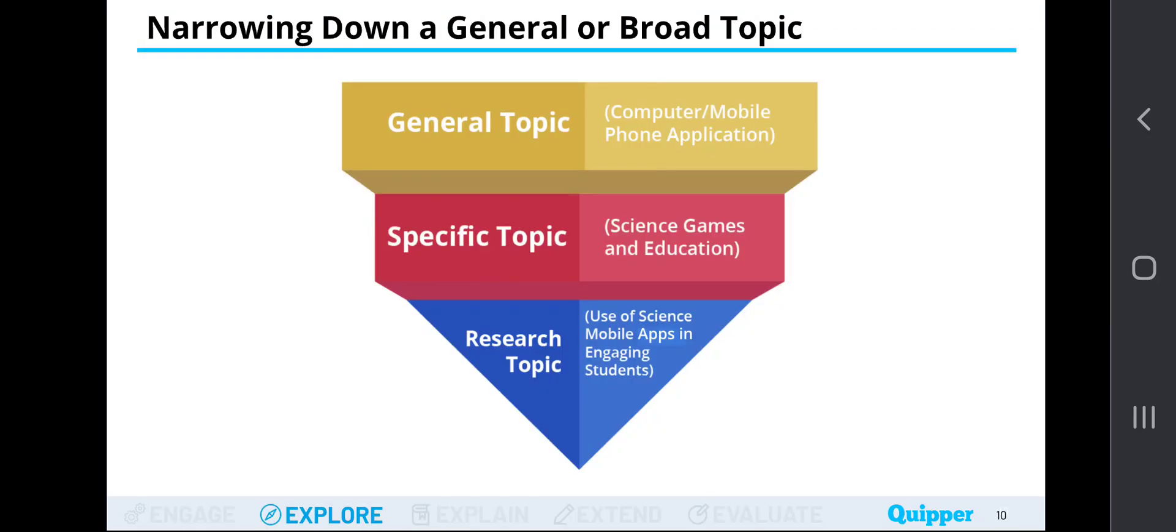Now, let's narrow down general and broad topics. In this example class, we are going to learn that research problems or conducting your research in a qualitative context will always begin with a general or broad topic. From there, we narrow it down to the specific topic and the research topic that we have. This applies not only to qualitative study but can also be applied to quantitative study. First is the general topic. An example given here is computer or mobile phone application to specify it to science, games, and education. Next, we conduct now the research study by crafting the research topic, Use of Science Mobile Apps in Engaging Students. Now, in doing so, we are making sure that there is a systematic process of narrowing down the topics from broad or general topics all the way up until your specific research problem or research topic.